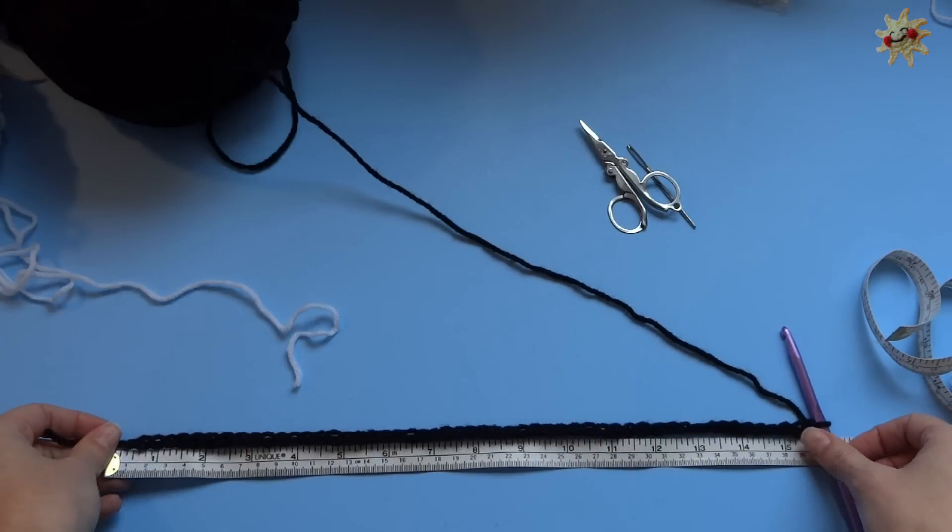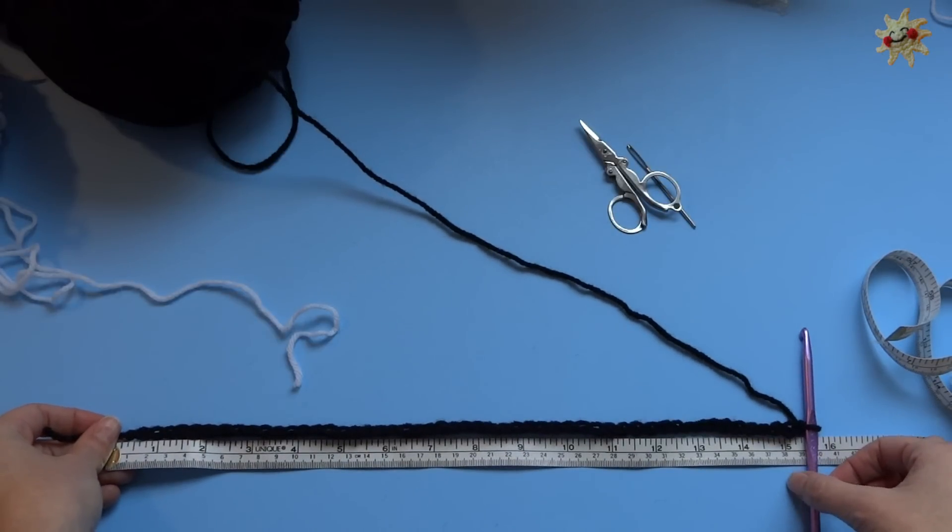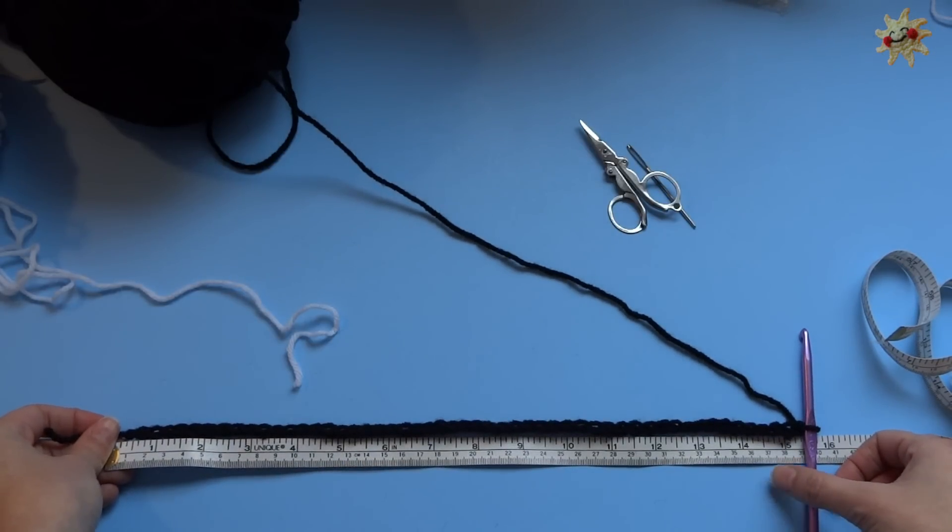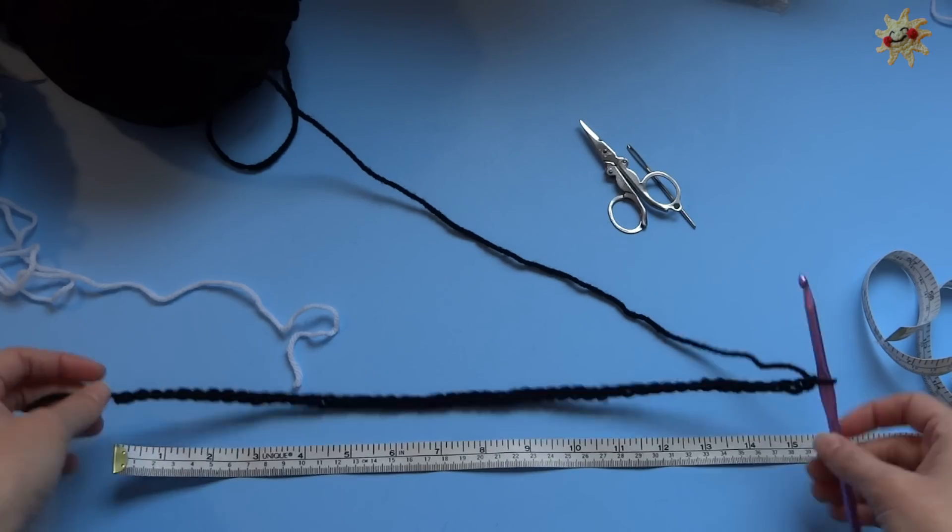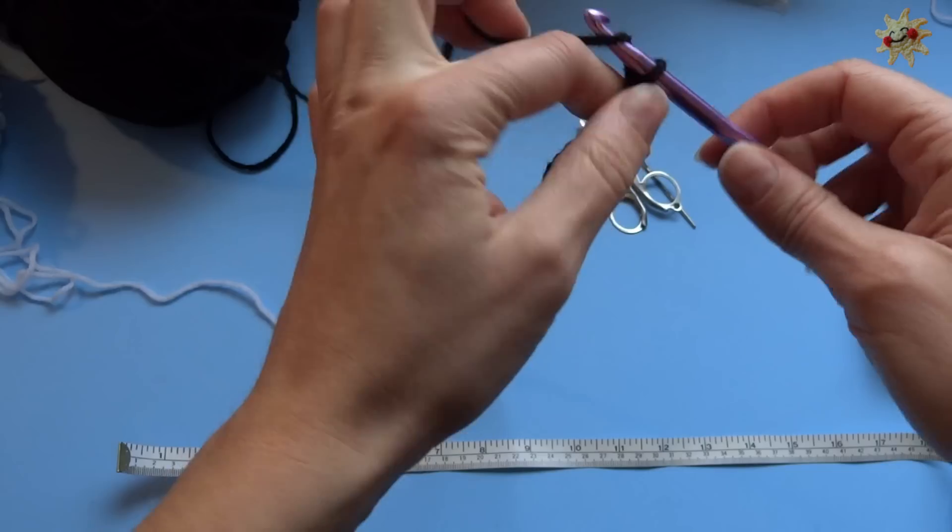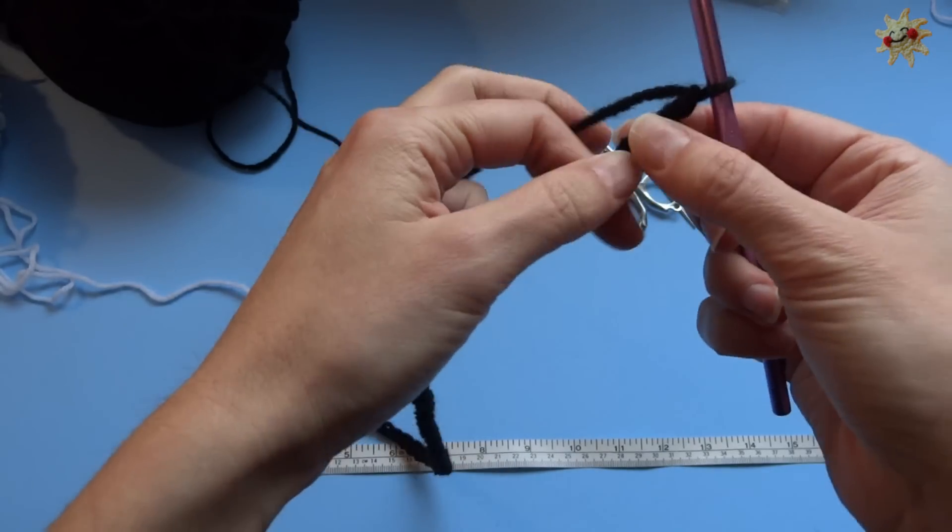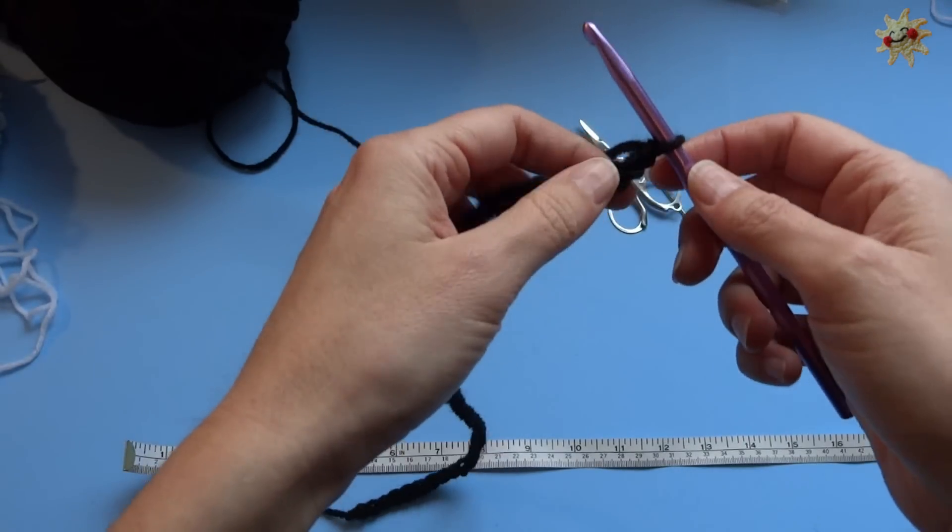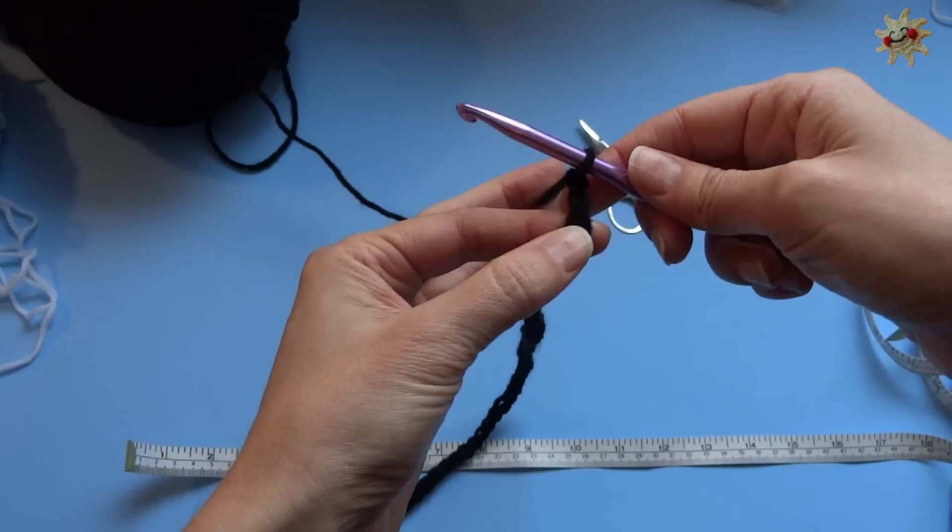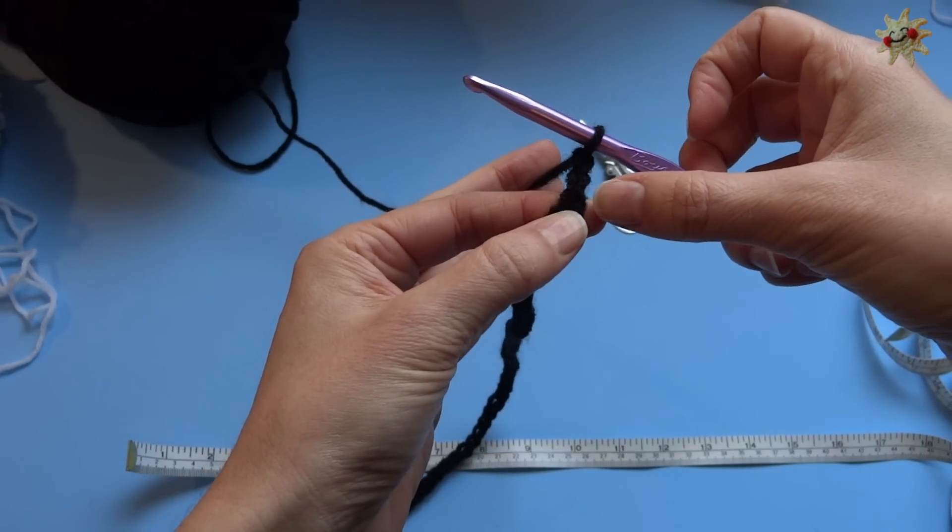Okay, I have chained a length which winds up being 52 chains long and that is 15 inches. So I'm going to go ahead and add two more because I'm going to do this in half double crochet.